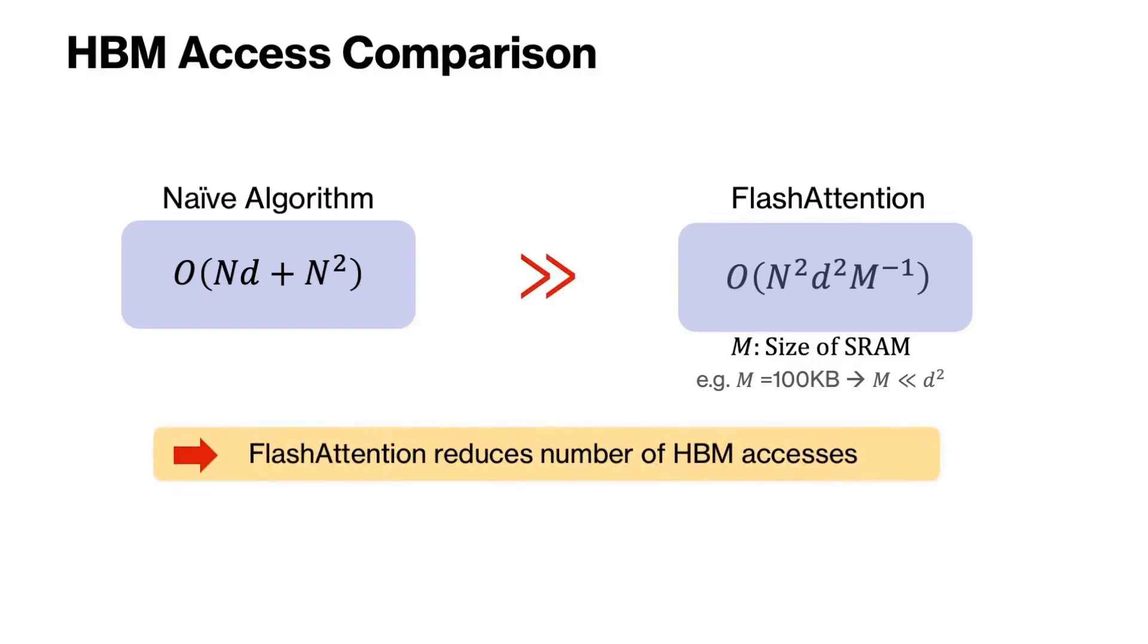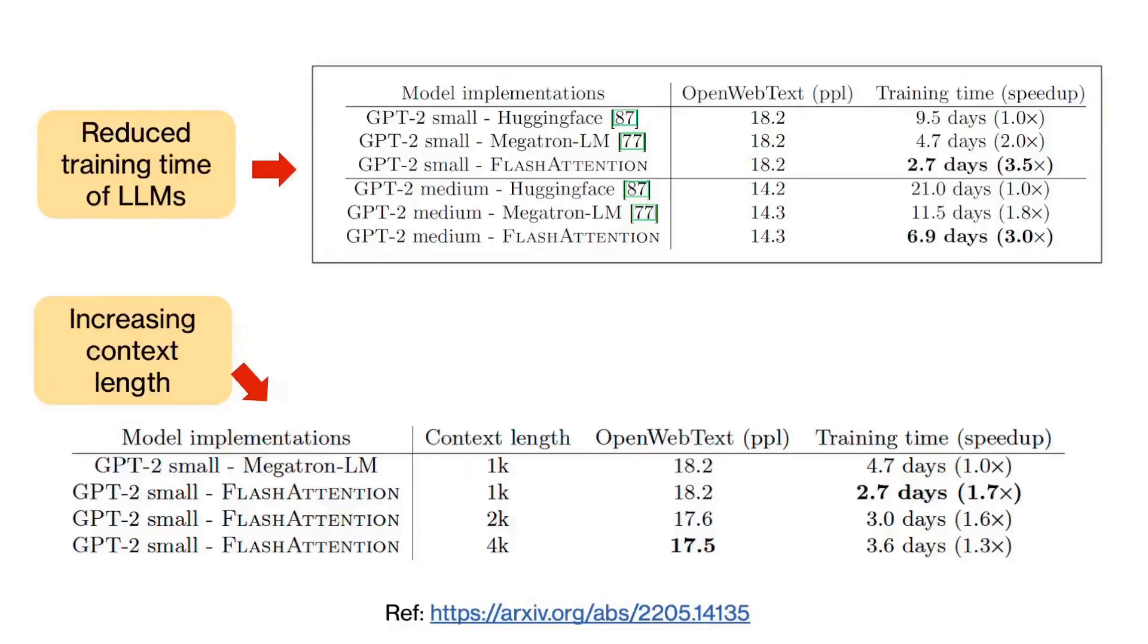On modern GPUs, the typical size of SRAM is about 100 kilobyte, which is much larger than d squared. So flash attention has significantly reduced the number of memory accesses and as a result it is able to accelerate the training of LLMs.